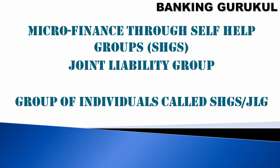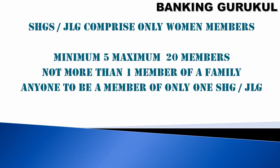These loans can be taken by self-help groups or joint liability groups. In India, loans are primarily given to joint liability groups. Individual liability means the person who takes the loan is solely responsible for repayment. In a joint liability group, if one person doesn't pay, the other members must share the repayment burden. These groups consist of four to five members and can be self-help groups or joint liability groups, comprising only women members.